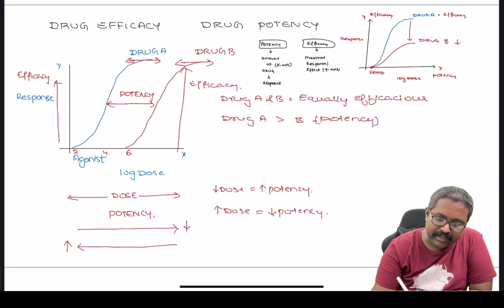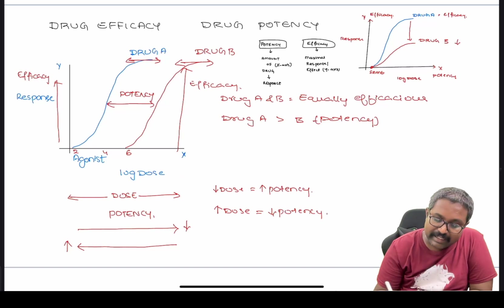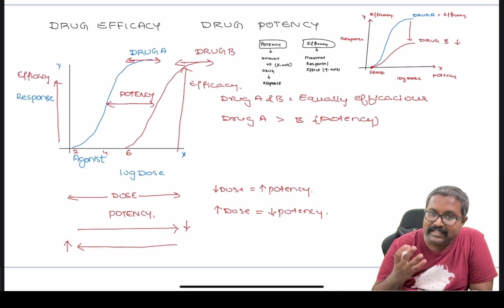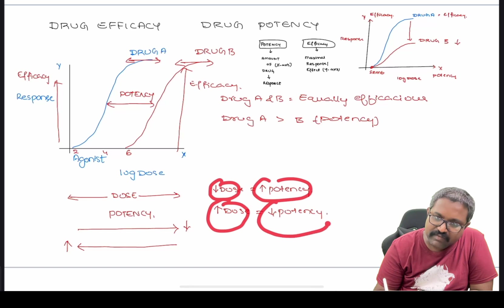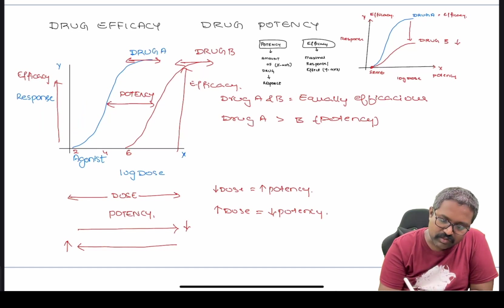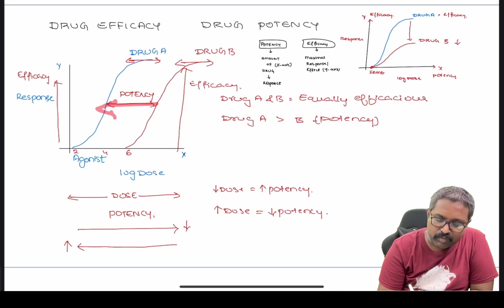On the x-axis we represent the dose, which is related to potency. As the dose moves further to the right, the potency decreases. If the drug moves to the left, the amount of drug required is less, meaning the drug has more potency. So if the dose is reduced, potency increases; if the dose is increased, potency is reduced. On the y-axis, the height gives the efficacy of a drug. The efficacy of drug A and drug B are similar, whereas drug A is more potent than drug B.